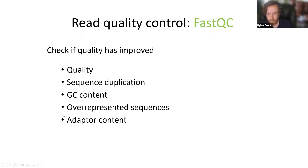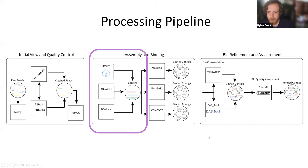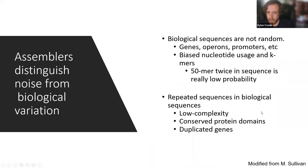You want to run FastQC before and after quality control. After running QC, you can see the average quality across the read is fairly high. With FastQC, check if quality has improved — look for average quality drops, sequence duplications, GC content, overrepresented sequences, and adapter content. These are some of the most important factors to examine.